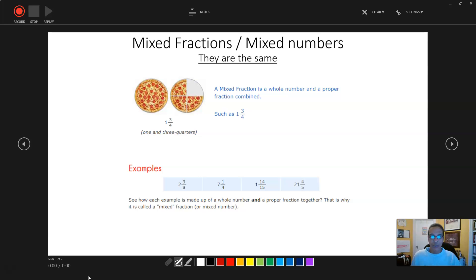Let's look at this one right here in the blue. 1 and 3 quarters is basically a whole number and a proper fraction combined. Some more examples down here at the bottom. You have 2 and 3 eighths. You have 7 and 1 fourth or 1 quarter.